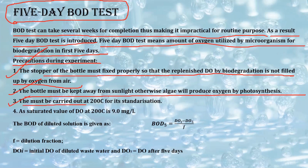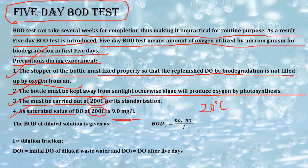Third, the experiment must be carried out at 20°C for standardization. The saturated value of DO at 20°C is 9 g/L. This is how we calculate BOD using the formula.